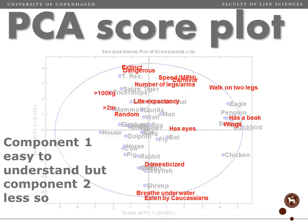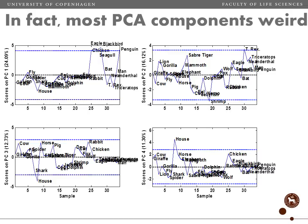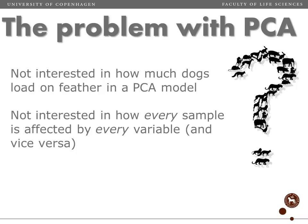Component number two is a little bit more difficult to get a sense of. Looking at all components one to four, component one was the bird component and that makes sense, but component two is very difficult to interpret — we have T-Rex, Saber-tooth, Tiger, Lion as opposed to Cow, Shrimps, Chicken. In general, most of the components are quite complex to interpret, and this is even a fairly simple data set.